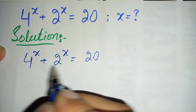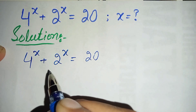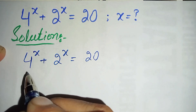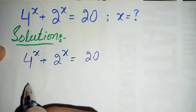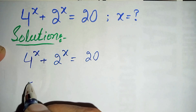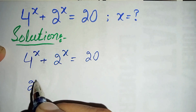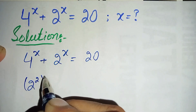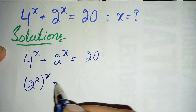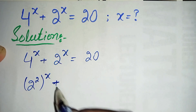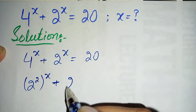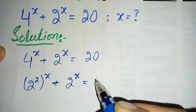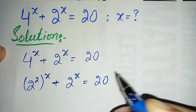Here we will try to make these two terms the same. So first we will change this term to its exponential form. We can write 4 as 2 raised to power 2, so this becomes 2 raised to power 2, whole raised to power x, plus 2 raised to power x, is equal to 20.